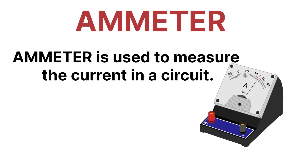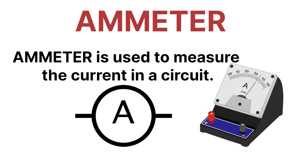Next is ammeter. An ammeter is an instrument used to measure electric current in a circuit. Here you can see that the ammeter symbol looks like this.